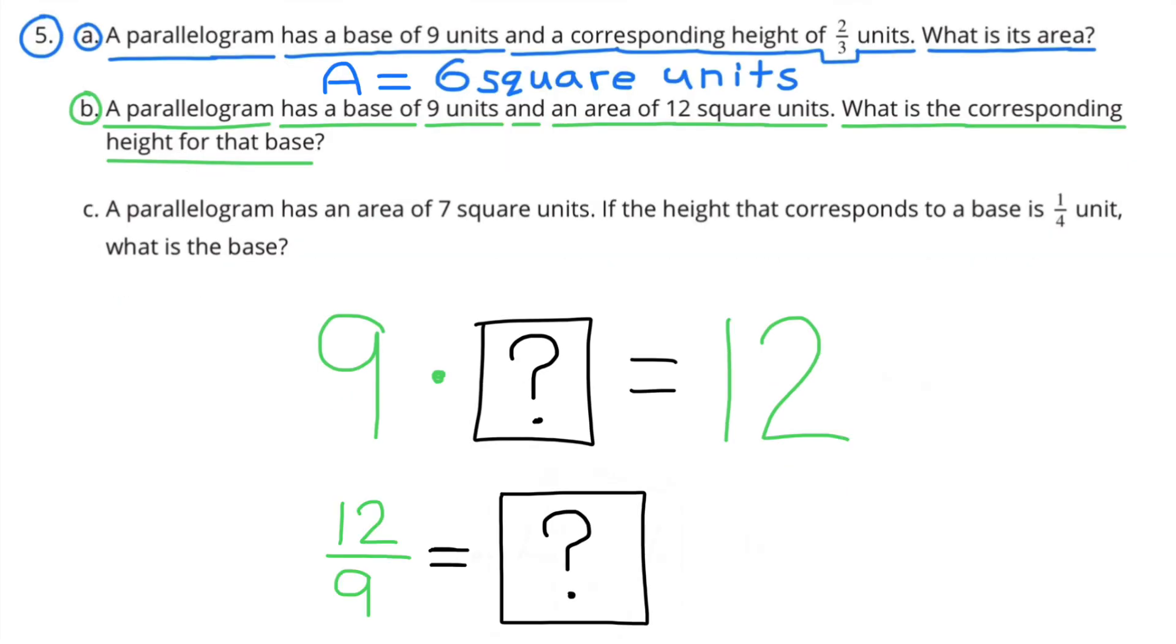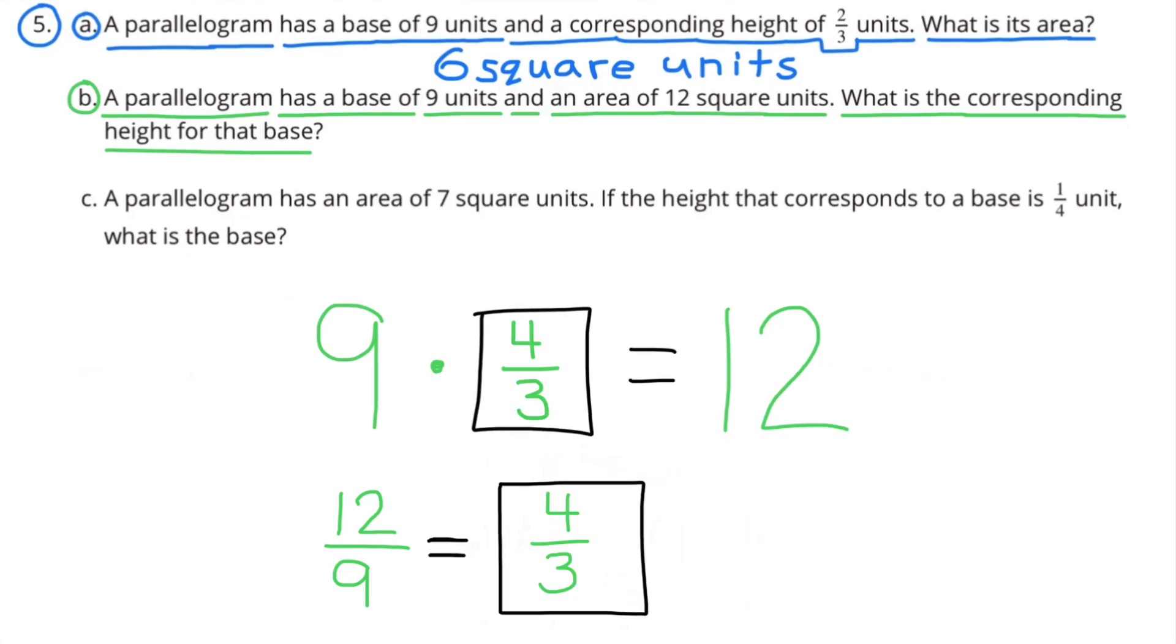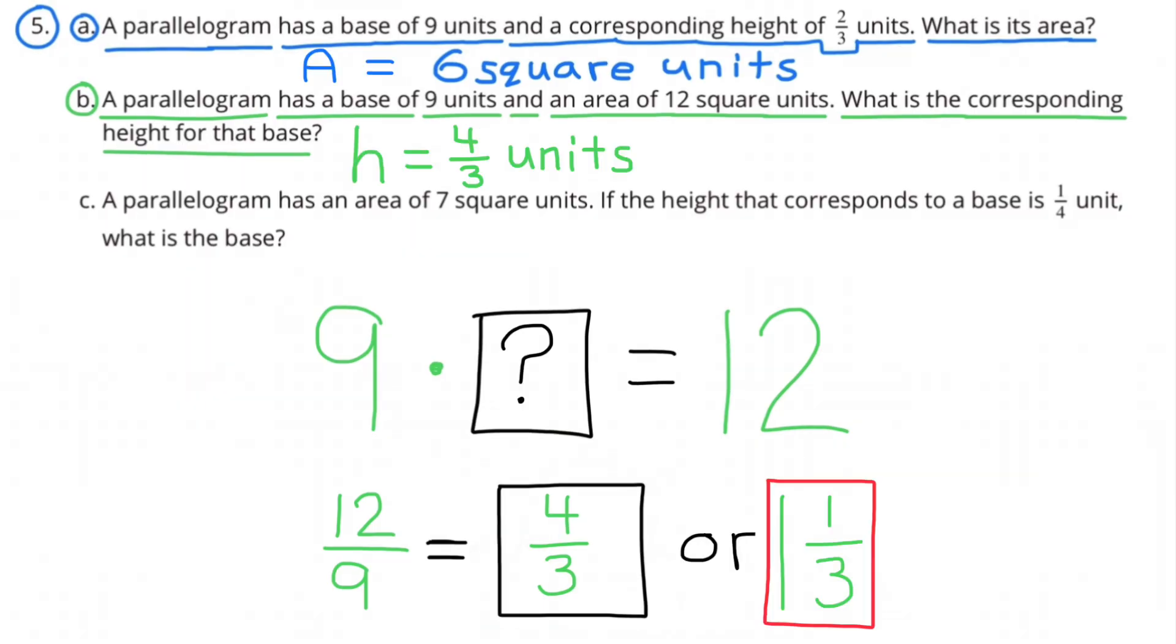And to figure that out, we need to divide twelve by nine, and twelve divided by nine is four-thirds, which is the same as one and one-third. So the height of this parallelogram is four-thirds, or one and one-third units.